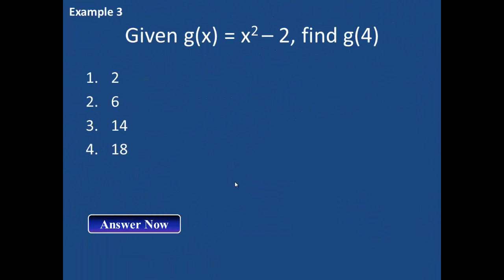In this third example, we are using the function g of x, which is equal to x squared minus 2. I would like you to take a moment and find g of 4, meaning you will replace x in the function with 4. If you replaced x with 4 and got 16 minus 2, you should have come up with the answer 14.